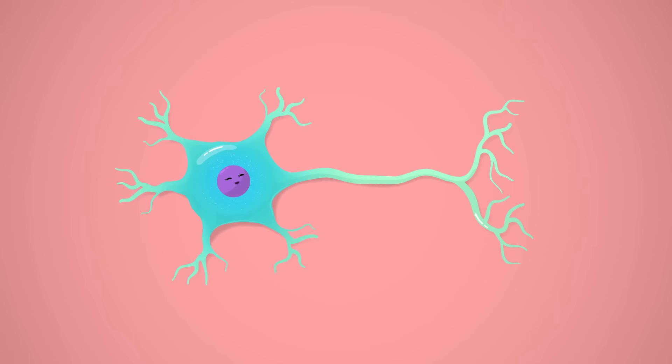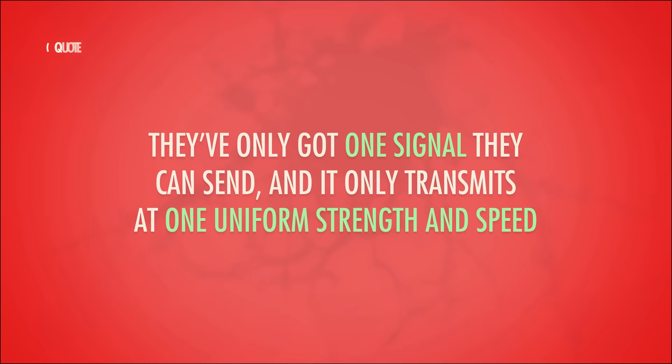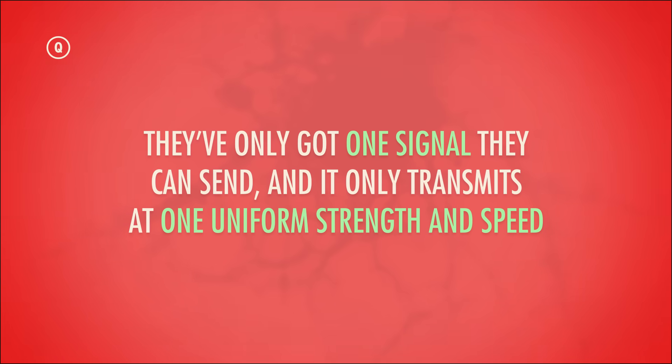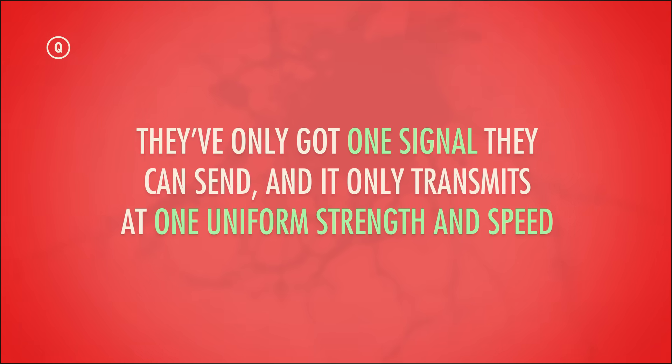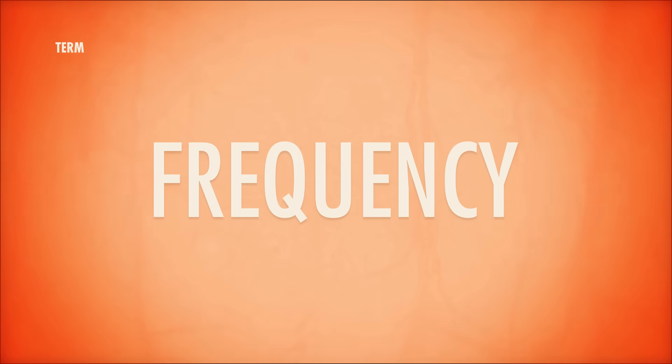Well, that is actually exactly how your neurons send all the impulses responsible for every one of your actions, thoughts, and emotions. When a neuron is stimulated enough, it fires an electrical impulse that zips down its axon to its neighboring neurons. But they've only got one signal that they can send, and it only transmits at one uniform strength and speed. What they can vary is the frequency, or number of pulses — like this, which is distinct from this.